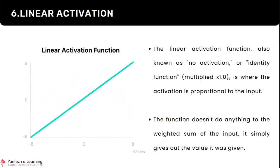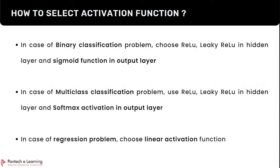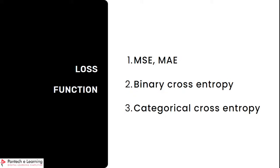Linear activation function, also called no activation function, simply outputs whatever input you give it — it doesn't apply any formula. This is used in regression-based outputs. To summarize: for binary classification, use sigmoid in the output layer; for multi-class classification, use softmax in the output layer; for regression, use linear activation in the output. For hidden and input layers you can choose ReLU, leaky ReLU, or tanh.